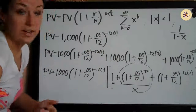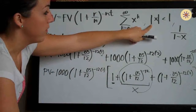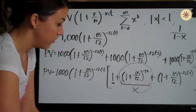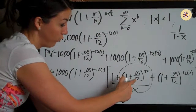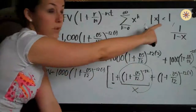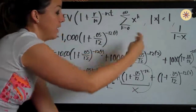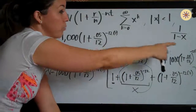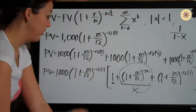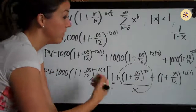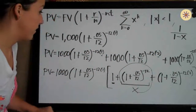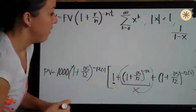Now we check the second part: is the absolute value of x less than one? If we calculate (1 + 0.05/12)^(−12) in the calculator, we get approximately 0.95, which is less than one. So the series converges, meaning we can calculate its value using the formula 1/(1 − x).